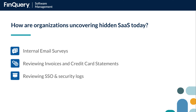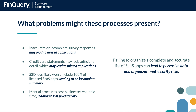We even talk with customers where they're uncovering SaaS applications from an IT perspective because they're receiving support tickets for these apps that were otherwise unsanctioned for use. When we think of the negative impacts that these processes could present to a business, we can see things like inaccurate or incomplete survey responses, which lead to missed applications in your inventory. Credit card statements may lack sufficient detail, which ultimately doesn't allow finance to track every application subscription that exists within the business. SSO logs likely won't include 100% of licensed SaaS apps, and it gives your security and IT teams an incomplete summary of all of the access events within the business. These manual processes ultimately cost businesses valuable time, leading to lost productivity.